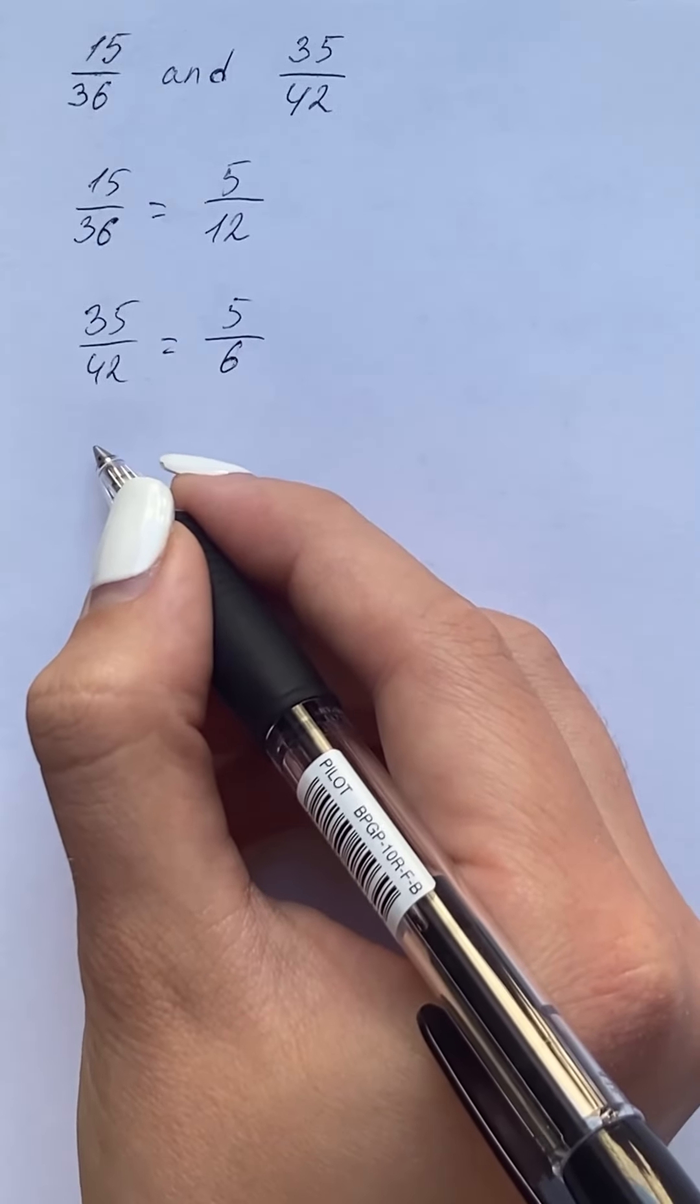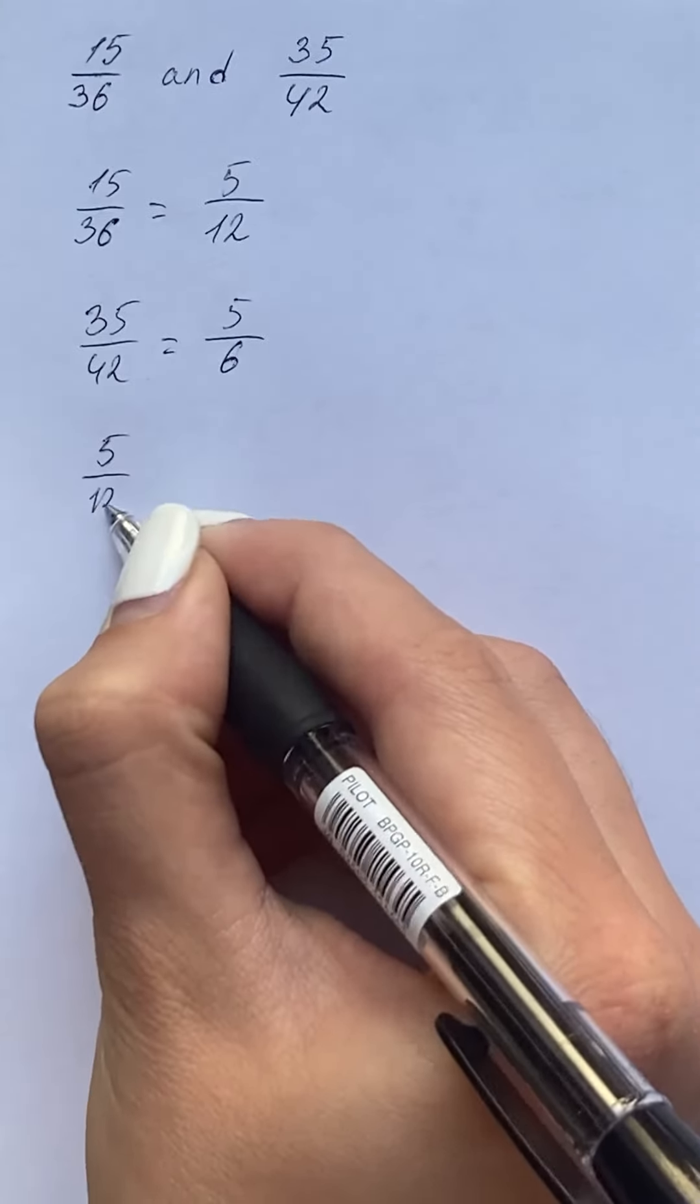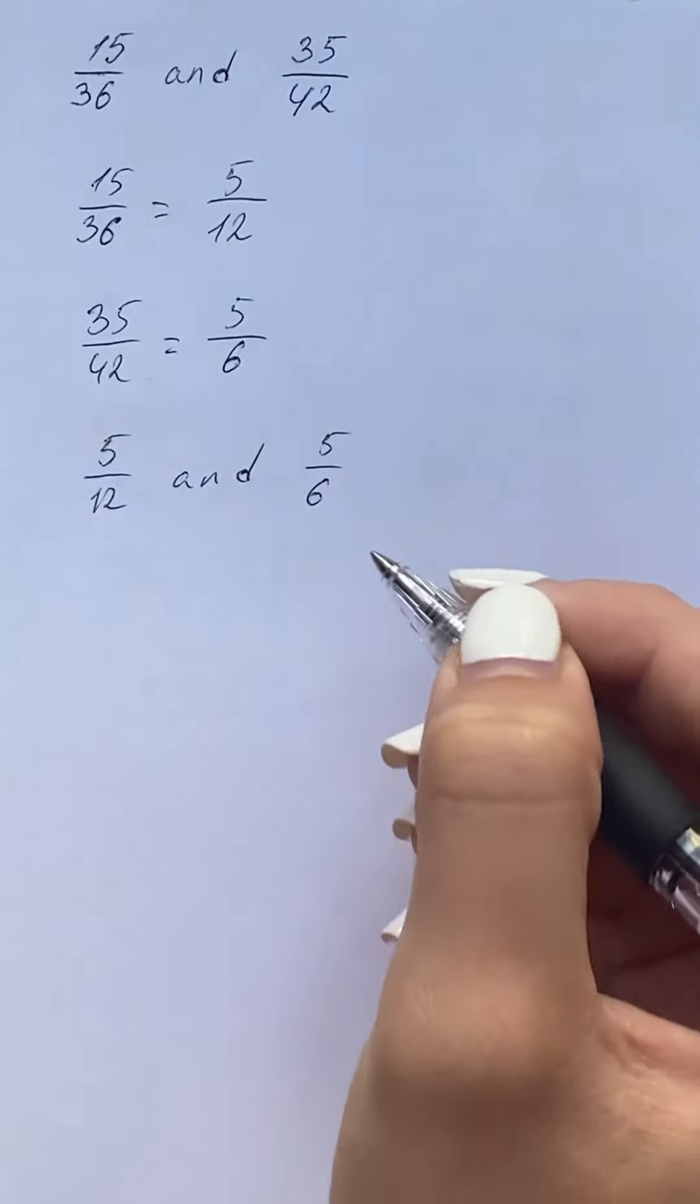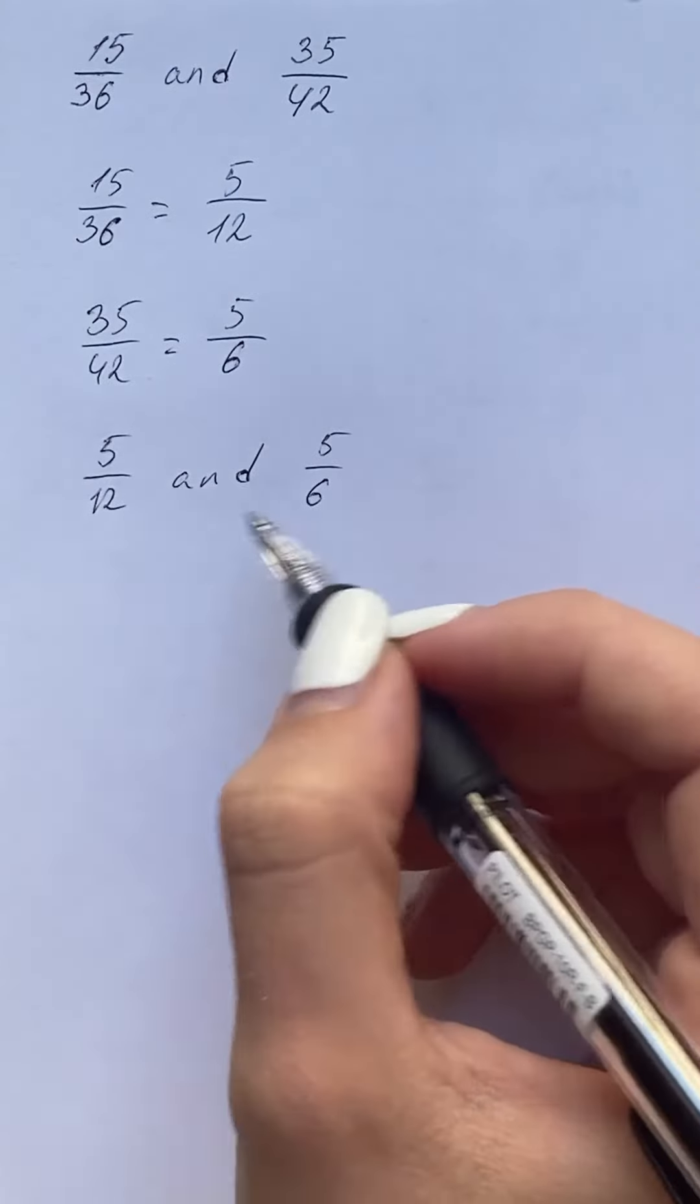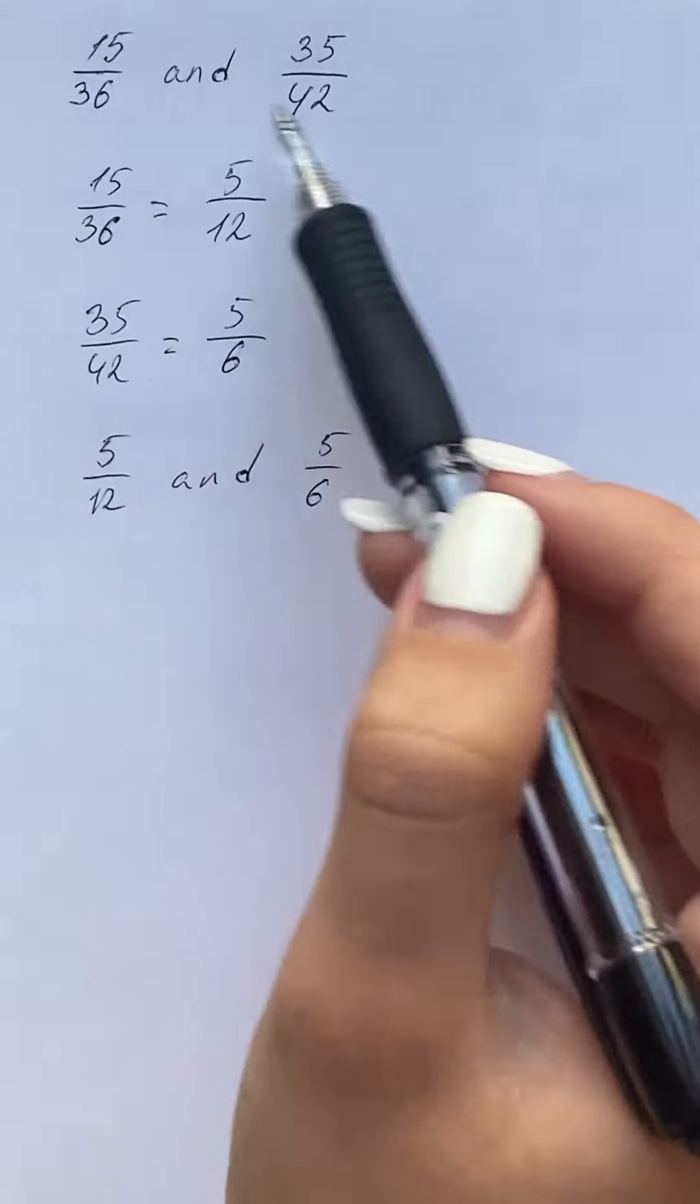In reduced form, the ratios are 5 over 12 and 5 over 6. We can see they are not equal, therefore the given ratios are not equivalent.